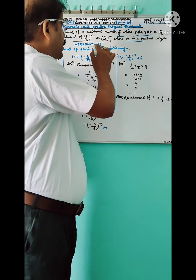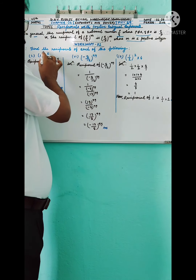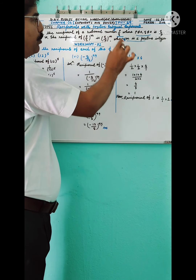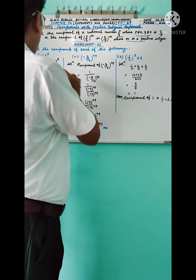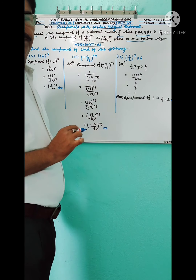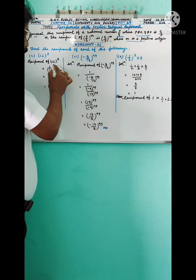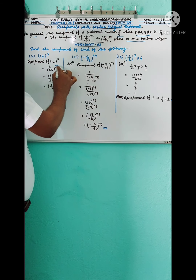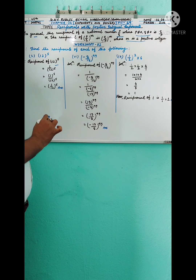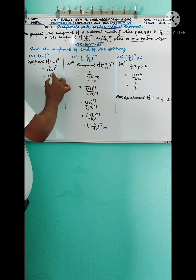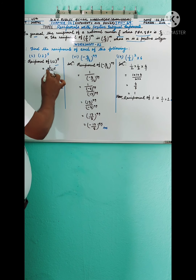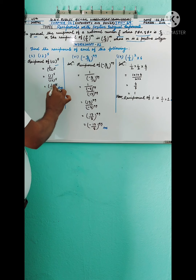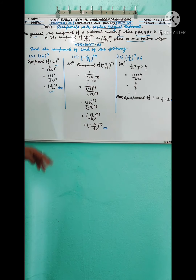Now I will start with question number 1: find the reciprocal of 12 to the power 5. The reciprocal of 12 to the power 5 is 1 by 12 to the power 5, since 1 can be written as 1 to the power 5. So the answer is 1 to the power 5 divided by 12 to the power 5, which equals 1 by 12 to the power 5.